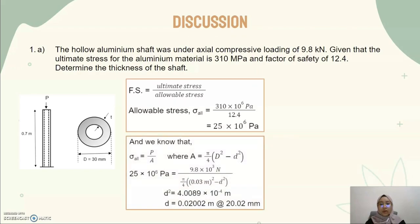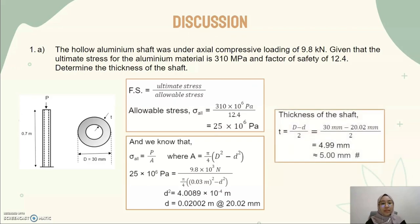Then, knowing that the allowable stress can also be calculated using the equation P over A, where A is given by the cross-sectional area equation, we substitute the value we obtained earlier and get the inner diameter equal to 20.02 mm. To determine the thickness of the shaft, we use the equation: outer diameter minus inner diameter, divided by 2. Substituting the values, we get the thickness equal to approximately 4.99 mm, or about 5 mm.